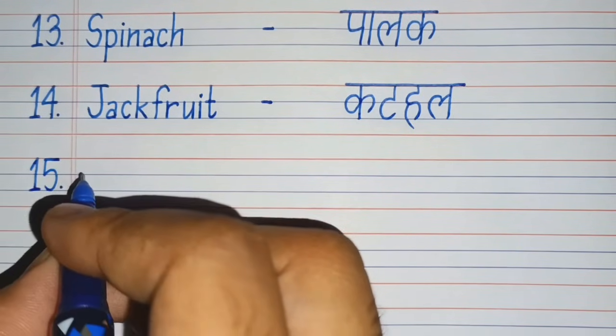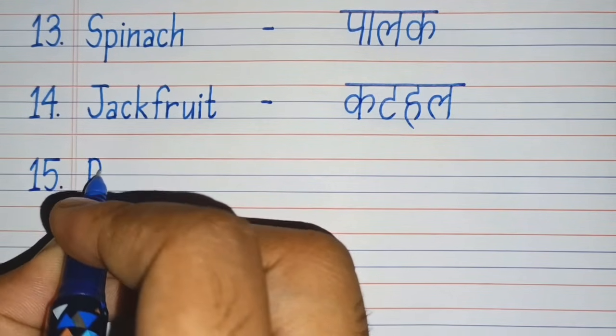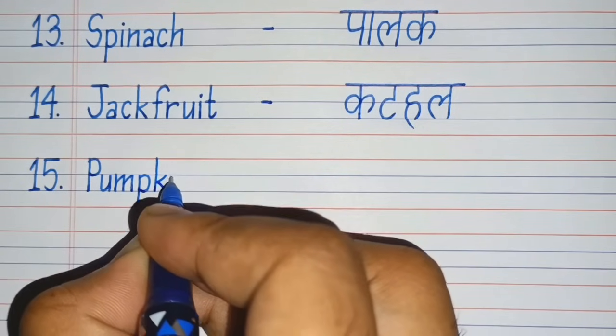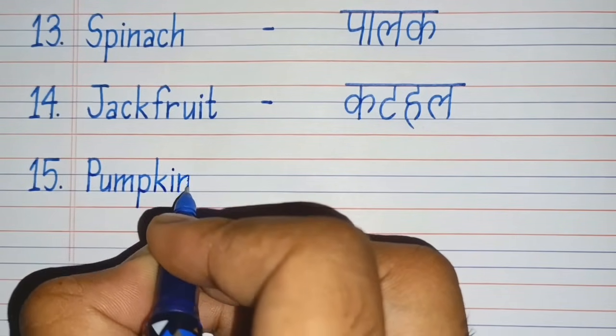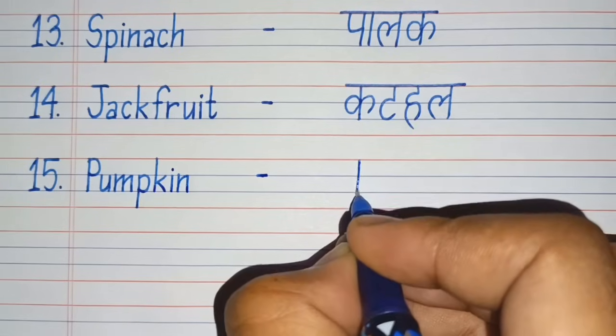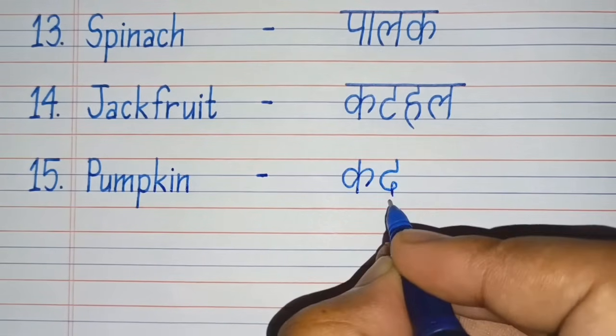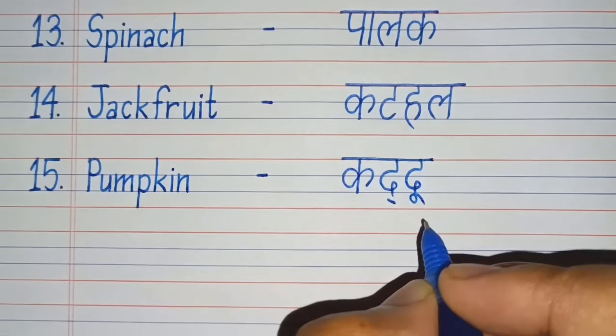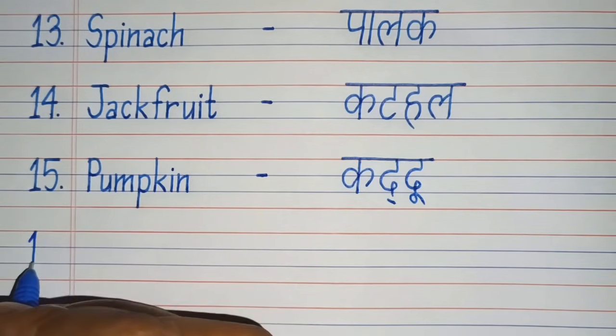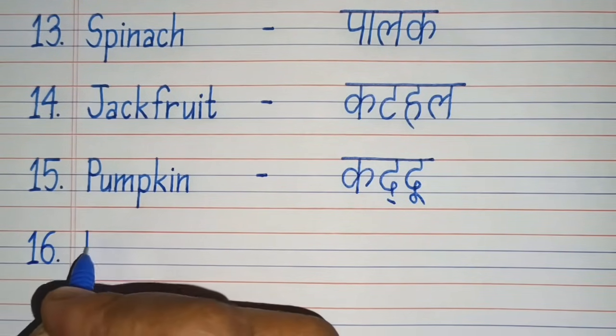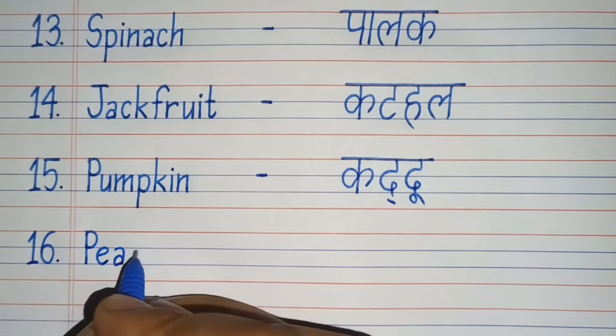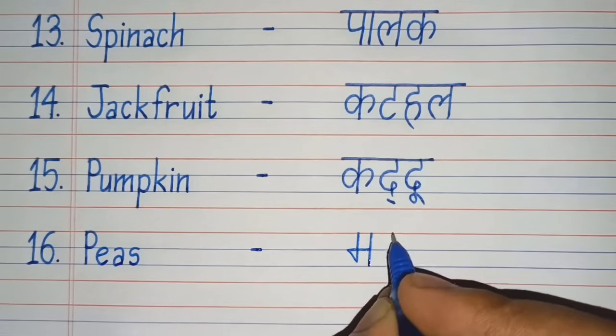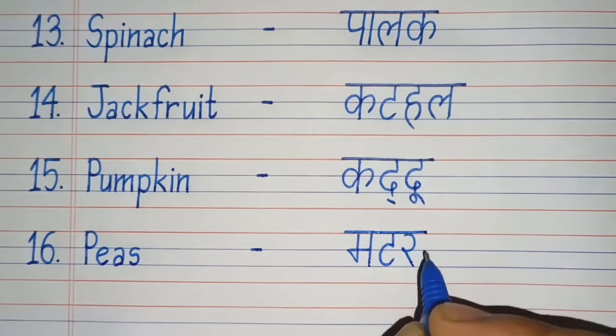Fifteenth number. P-U-M-P-K-I-N, Pumpkin. Pumpkin means Kaddu. Sixteenth number. P-E-A-S, Peas. Peas means Matar.